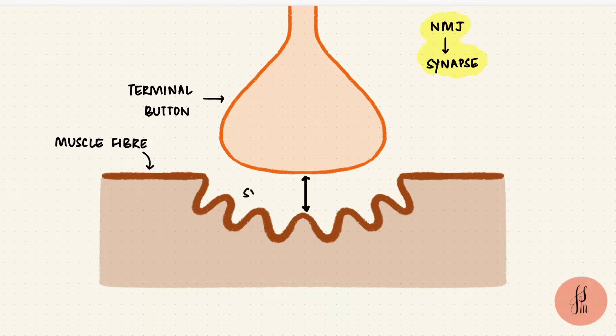So the space between the two forms a synaptic cleft, which is around 30 nm wide. The neuronal membrane before the synapse forms the pre-synaptic membrane, and the muscle fiber membrane after the space forms the post-synaptic membrane.